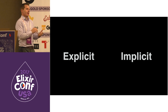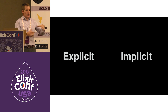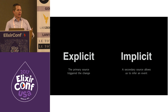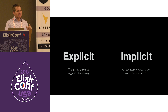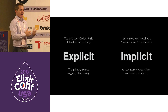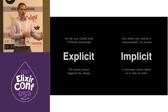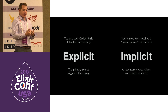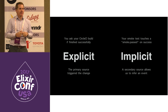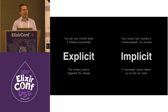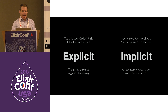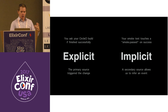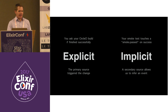The next angle is explicit versus implicit, which comes down to your alternative to doing nothing. Explicit is a legitimate real trigger — the primary source triggered a change. Implicit is a secondary source. You can ask CircleCI 'is the build finished?' — when it answers 'yes, I finished successfully,' that's an explicit trigger. But if you don't have the money or resources for CircleCI, you just touch a file called 'smoke.passed' — that's a secondary source where you're inferring an event happened, tangential to push or pull.